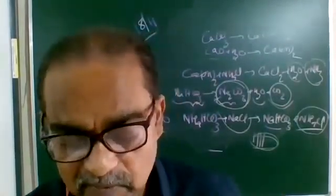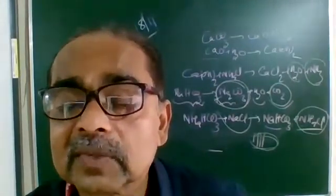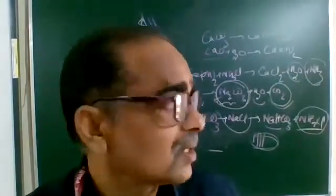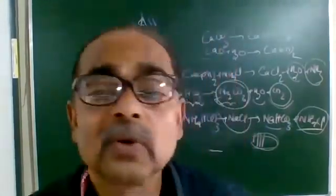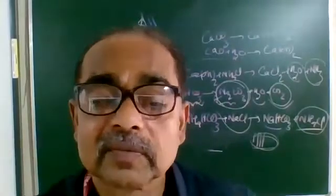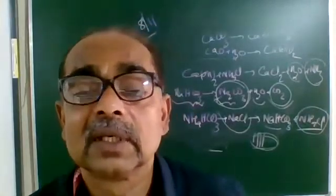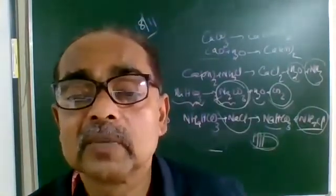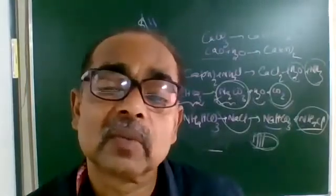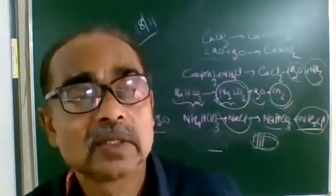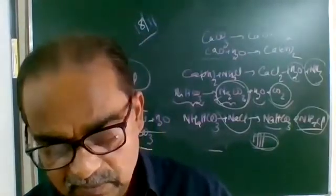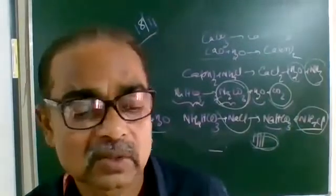Washing soda is soluble in water. It is a salt of a strong base and weak acid, therefore its solution is alkaline in nature. Washing soda crystals are efflorescent — efflorescence is the property by which a crystalline substance loses water of crystallization and crumbles to powder. Deliquescence and efflorescence are opposite to each other. Deliquescence is the property of a material to absorb moisture and become wet. When nine molecules of water are lost, anhydrous washing soda, known as soda ash, is formed.